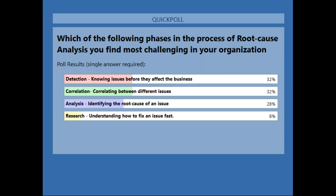These results mirror what we're seeing: talking with many medium to large US enterprises, they all share problems all across the root cause analysis chain. Detection is always a problem — knowing issues before they affect the business is the hardest thing because everyone uses monitoring systems but it's always a bit too late. Correlation is always hard, and analysis is the holy grail. I was surprised by the research part — it seems most users have decent knowledge about their log lines and good documentation. We'll show you how we can help with that part as well over the next few minutes.